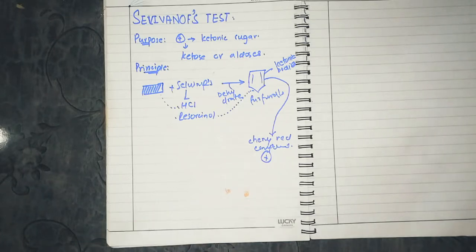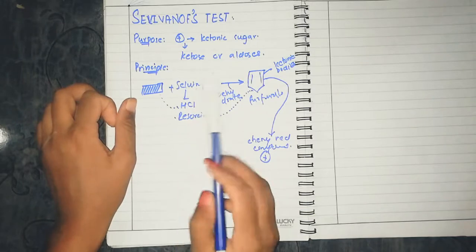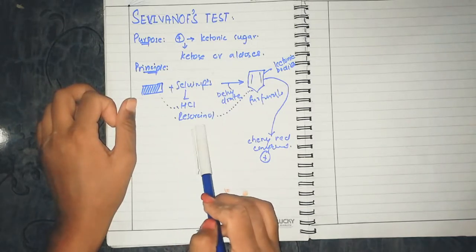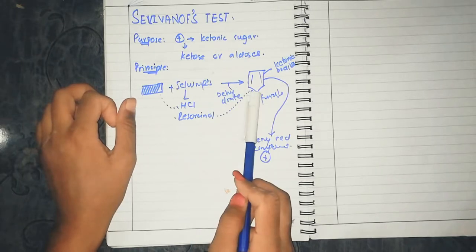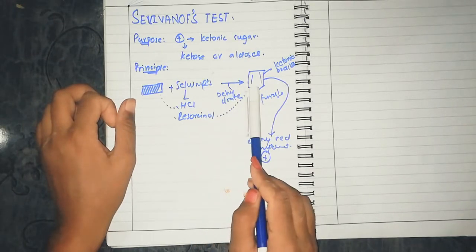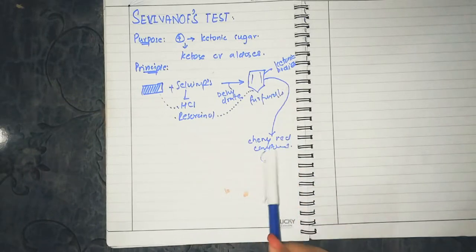Very easy. You react with Selivanov's reagent containing HCl and resorcinol. In HCl's presence, carbohydrates dehydrate. If there are keto-hexoses, they react with resorcinol to give a cherry red compound, which means the test is positive and ketonic sugar is present.